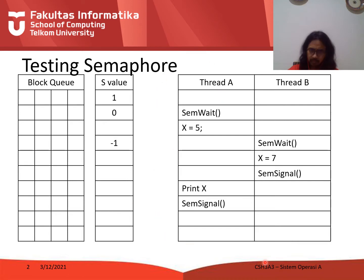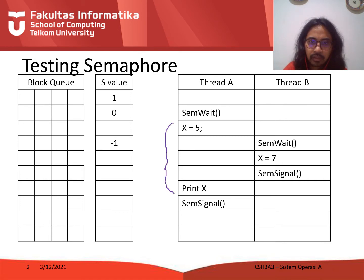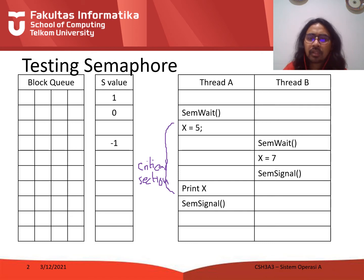We have already explained how it works: the s value is 1 and then it becomes 0 because thread A accesses the semaphore at wait and then enters the critical section. As we explained, when a thread enters a critical section, other threads will be blocked.